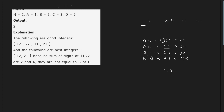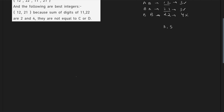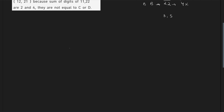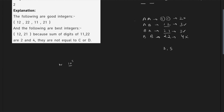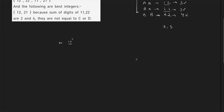We have to find the total number of best integers for any given values of n, a, b, c, and d. The value of n can be up to 10^5, so making all possible combinations directly will not be feasible for such huge values.